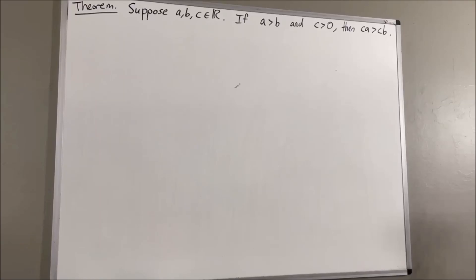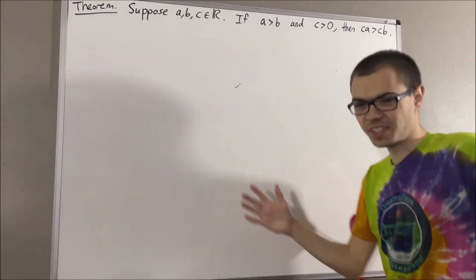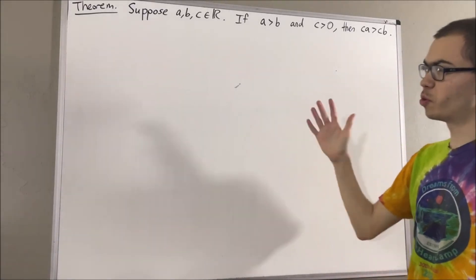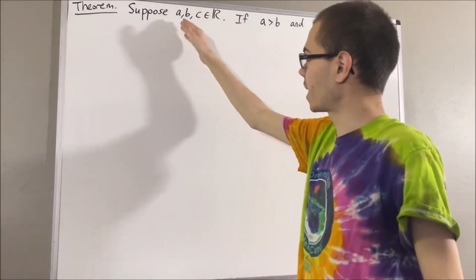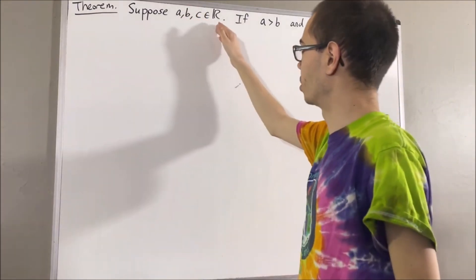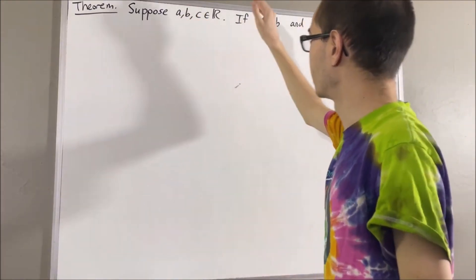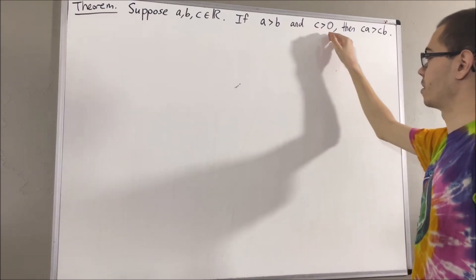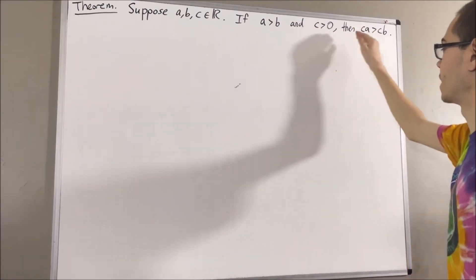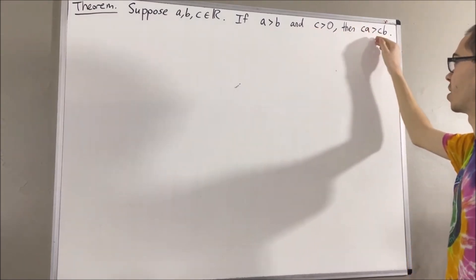Hello! In this video, we are going to prove the following theorem. Suppose A, B, and C are real numbers. If A is greater than B and C is greater than 0, then CA is greater than CB.